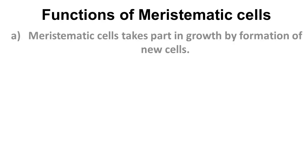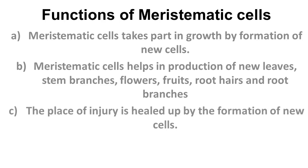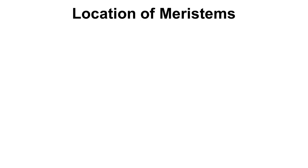The functions of meristematic cells include: taking part in growth by formation of new cells; helping in the production of new leaves, stem, branches, flowers, fruits, root hairs, and root branches; and also playing a role in the formation of new cells whenever injury occurs in the plant. Depending on their location, meristematic tissues are classified into three groups: apical, intercalary, and lateral. We should understand where each type is located and what it does in the plant body.